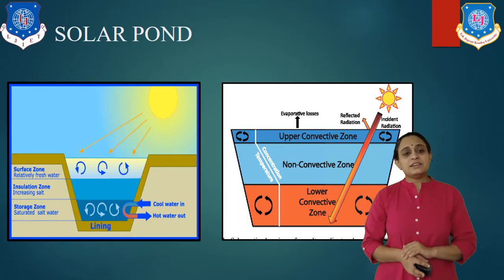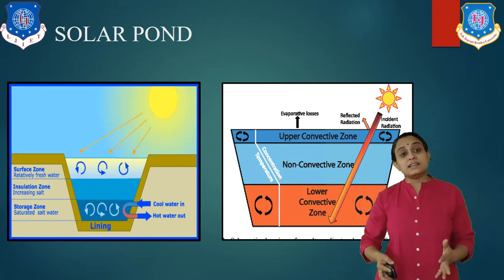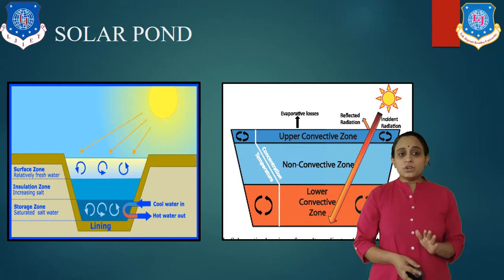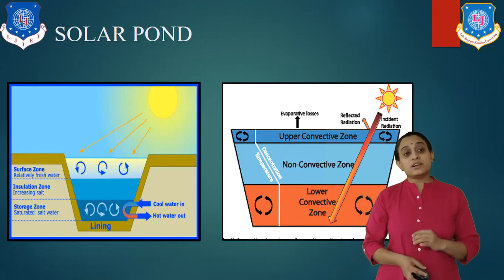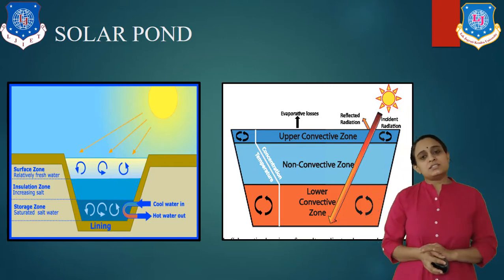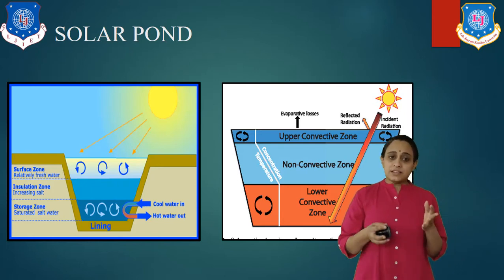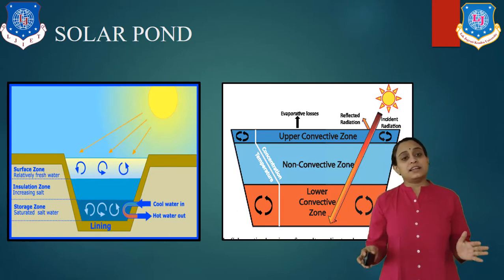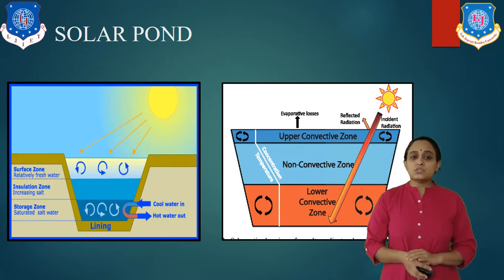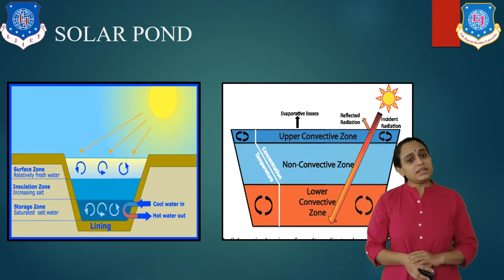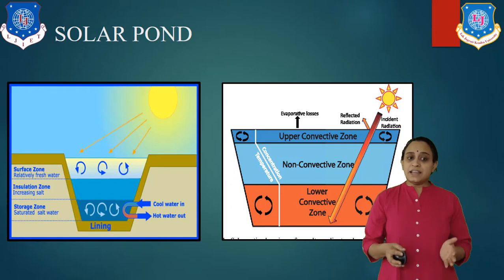First of all, let us understand what a solar pond is. As you see in this diagram, a solar pond is a simple device for collecting solar energy, generally fairly large in size that looks like a pond. In this type of solar energy, collectors use a large salty lake as a kind of flat-plate collector that absorbs and stores energy from the sun in the warm lower level of the pond. These ponds can be natural or manufactured.